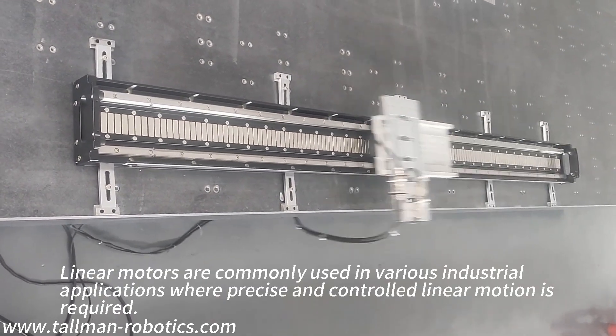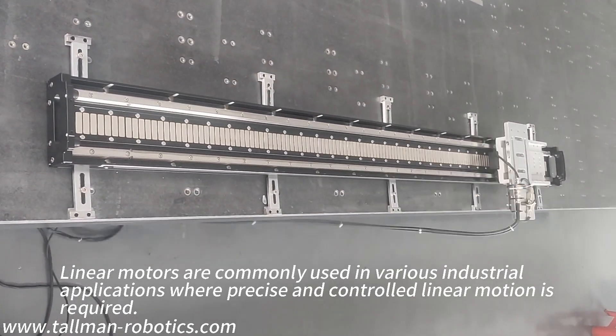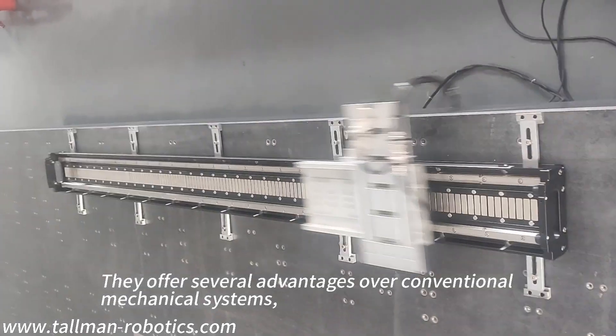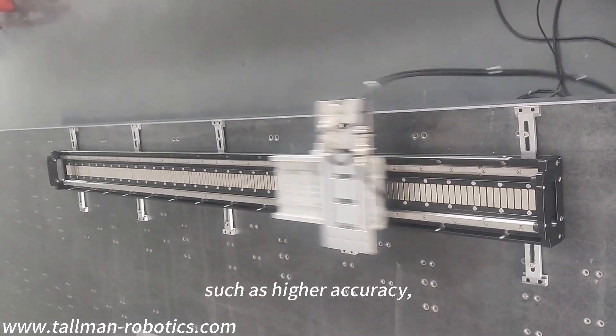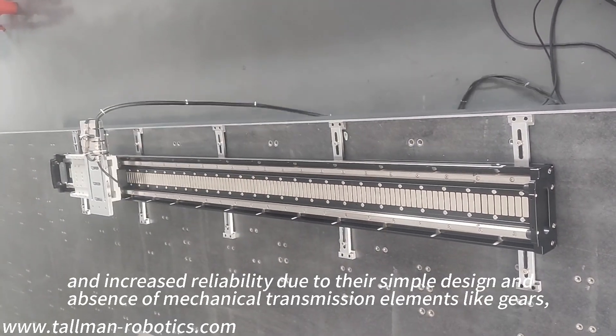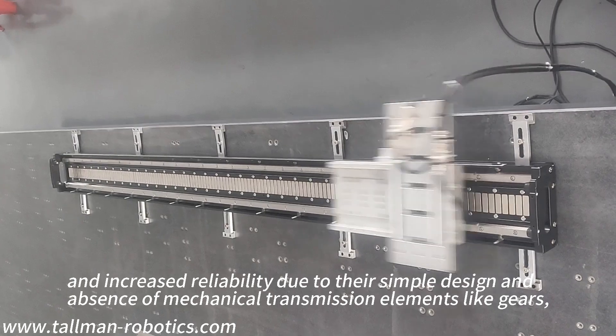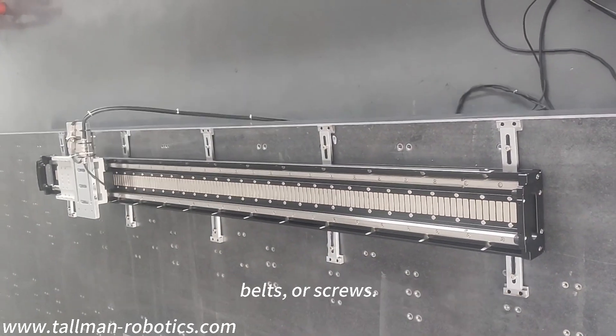Linear motors are commonly used in various industrial applications where precise and controlled linear motion is required. They offer several advantages over conventional mechanical systems, such as higher accuracy, faster response times, and increased reliability due to their simple design and absence of mechanical transmission elements like gears, belts, or screws.